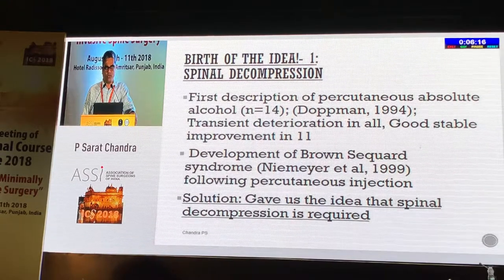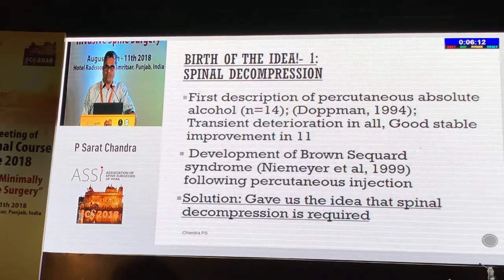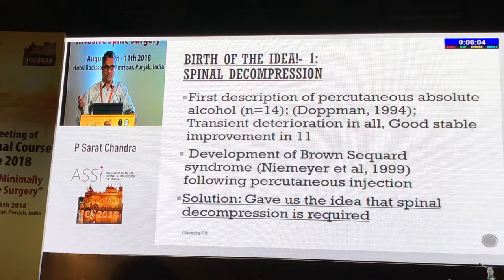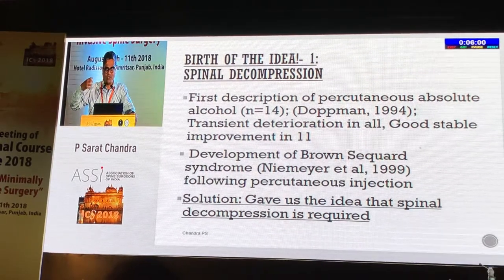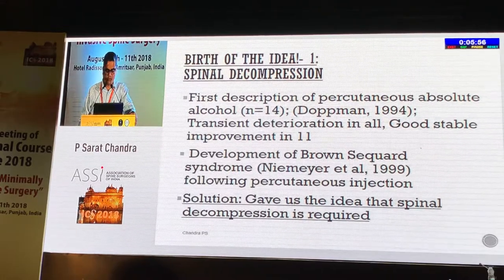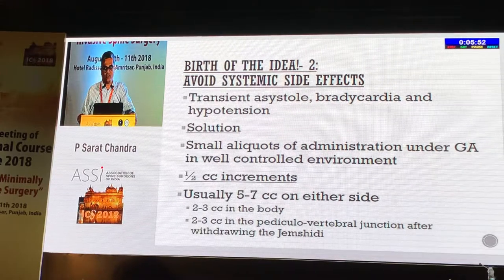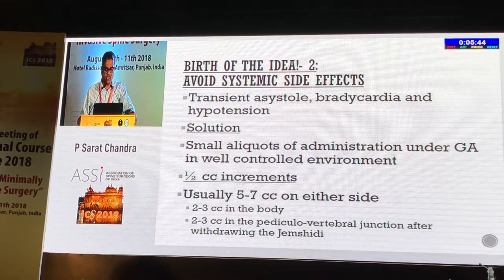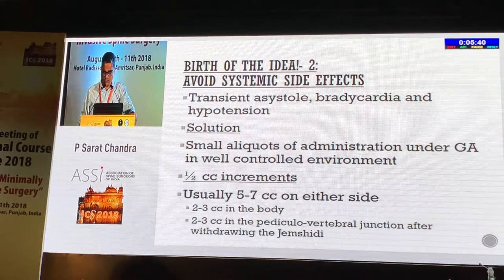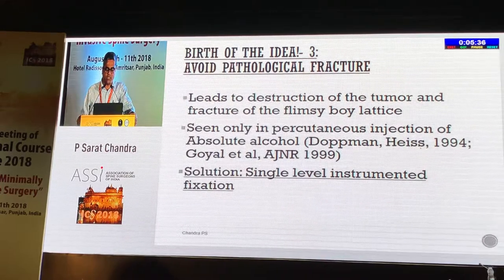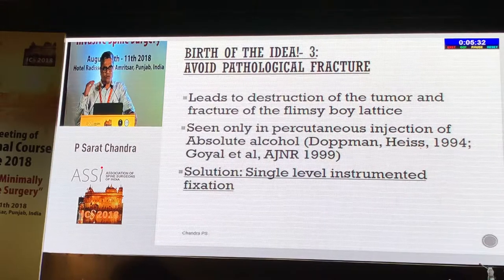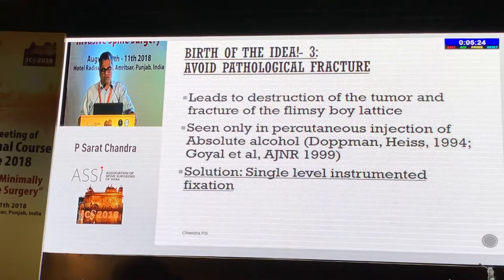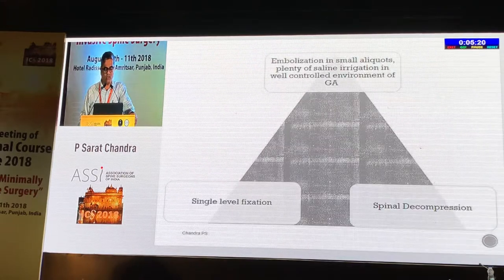When percutaneous alcohol is injected, even starting from Dockman et al., they reported transient deterioration in almost 70% of patients — in one case a Brown-Séquard syndrome — because you are injecting alcohol in a closed compartment and not relieving compression. The solution is spinal decompression. Systemic side effects can be overcome by giving small aliquots of not more than half cc per injection under general anesthesia. To avoid pathological fractures, since absolute alcohol eats away the tumour leaving a weakened bony lattice, you perform a single-level instrumented fusion.